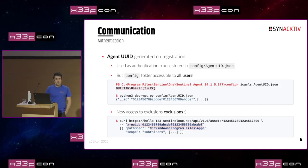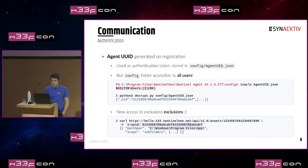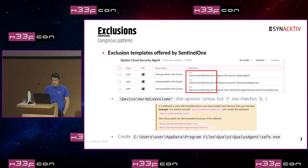Looking at the communication system between the agent and the console, we noticed in the configuration files that there is a specific UID generated after agent registration. It is stored in the config folder in agentuid.json. Because the config folder is the one that SentinelOne didn't restrict, we can still access it with unprivileged users. We retrieve the UID generated by the agent, and by contacting the console ourselves, we can retrieve the exclusions again.